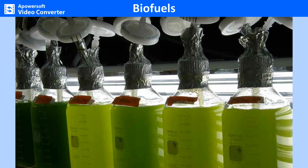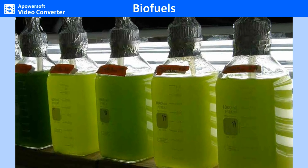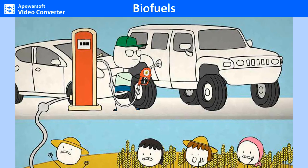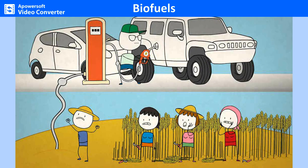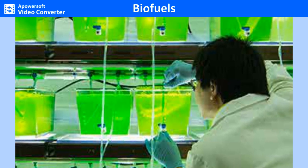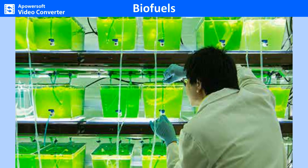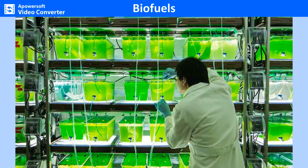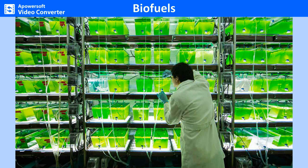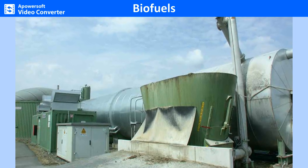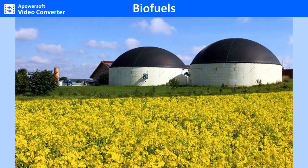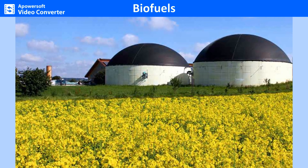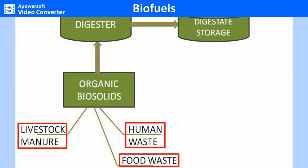Any fuel derived from biomass — plant material or animal waste — is known as biofuel. Due to the shortage of fossil fuel and high costs of production and processing, the emphasis has shifted to renewable and alternative power sources. Biofuel is made from renewable resources and must contain over 80% renewable materials. It can be liquid, solid or gaseous. Biogas is produced by the breakdown of organic matter in the absence of oxygen. It is a clean, easily controlled source of renewable energy that can be produced from regionally available raw materials and recycled waste, and is environmentally friendly.